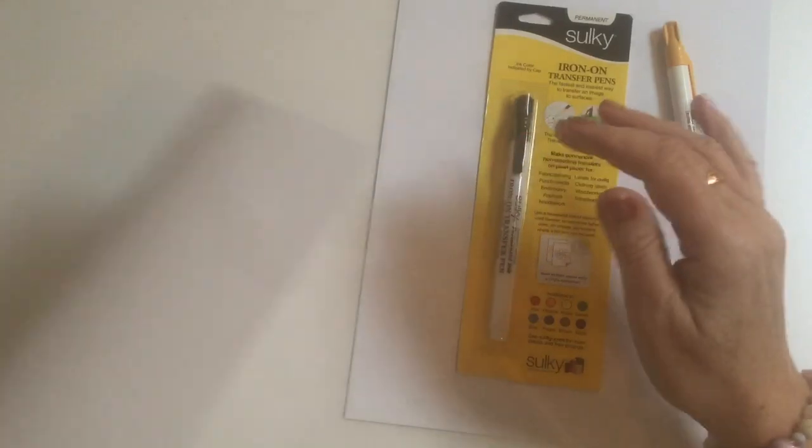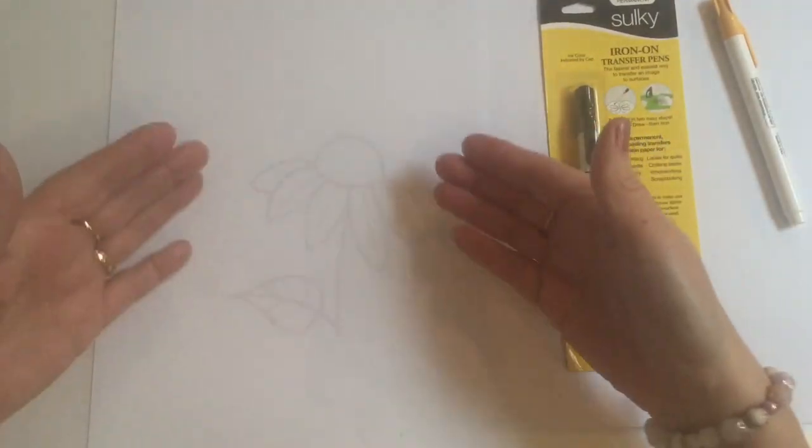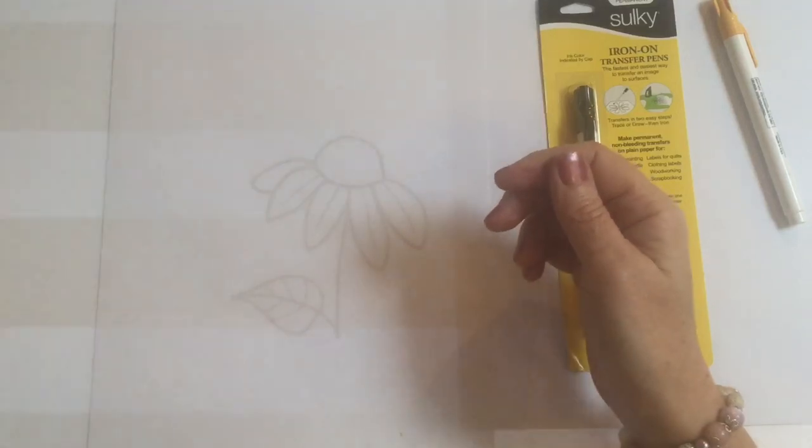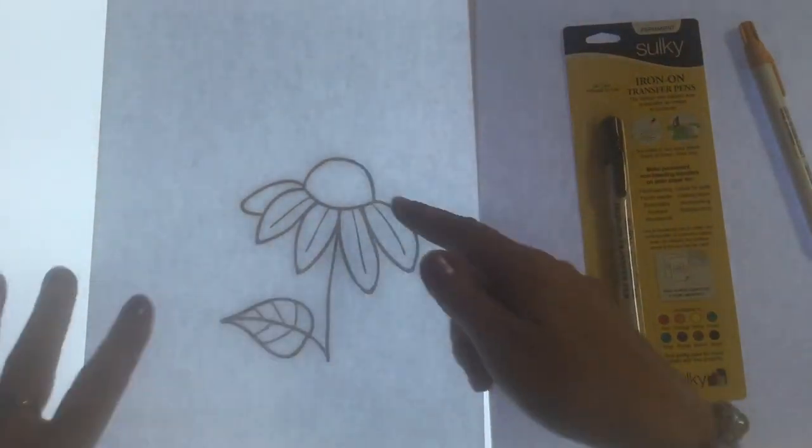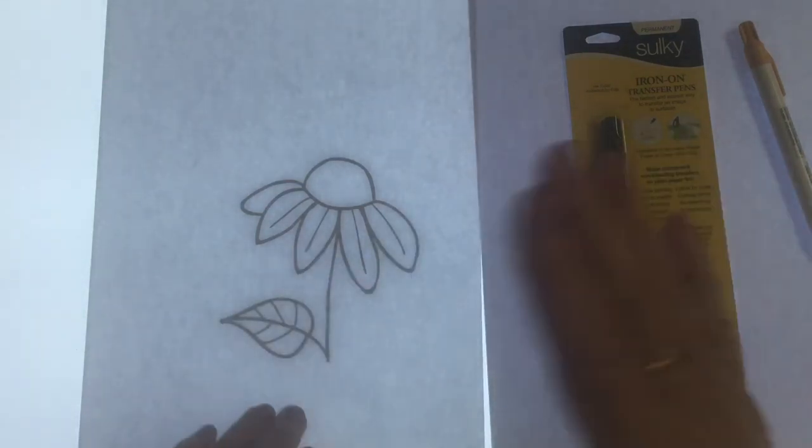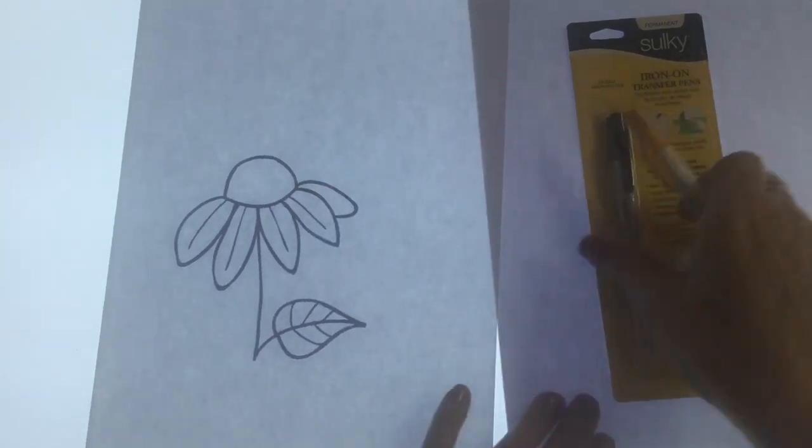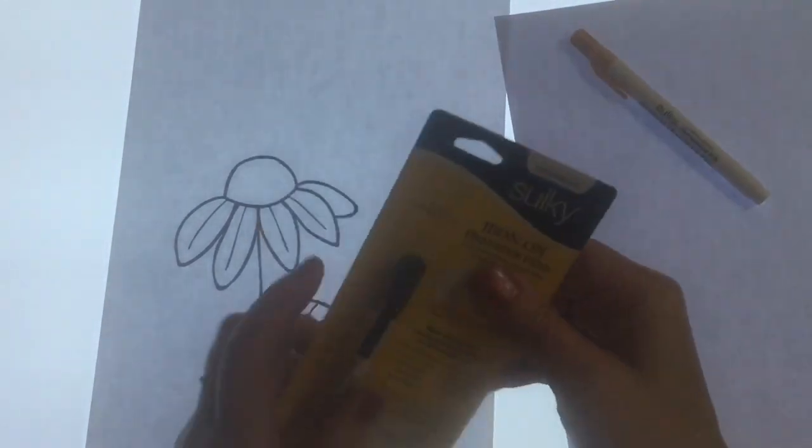The other option of course is that you can trace it through a light box or whatever and trace it through that way, you know, get the ultra light source on here. So you can actually use that to trace it and then when you do your iron-on transfer, of course, it's then going to come out this way. Okay, so we'll undo this black one.